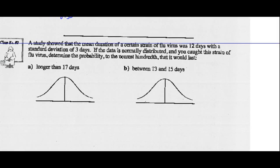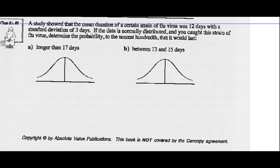Example 2. A study showed that the mean duration of a certain strain of virus was 12 days with a standard deviation of 3. If the data is normally distributed, let's put that in here: 12 days, standard deviation is 3. If you recall, we did this in Lesson 6, but let's do it quickly here again. Determine the probability to the nearest hundredth that it lasts longer than 17 days. So here's 17, longer than that.